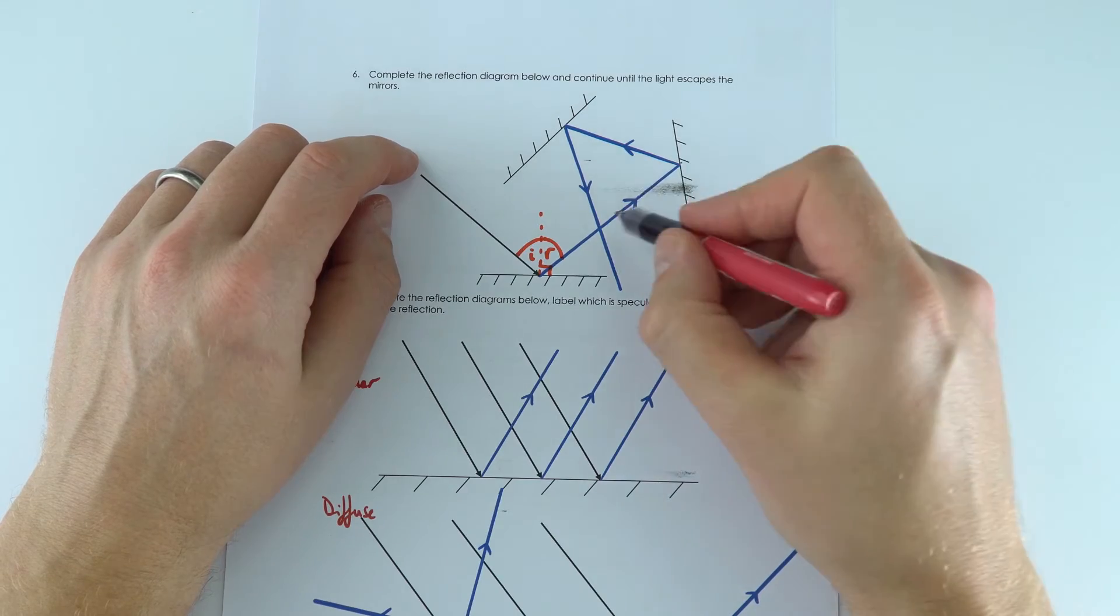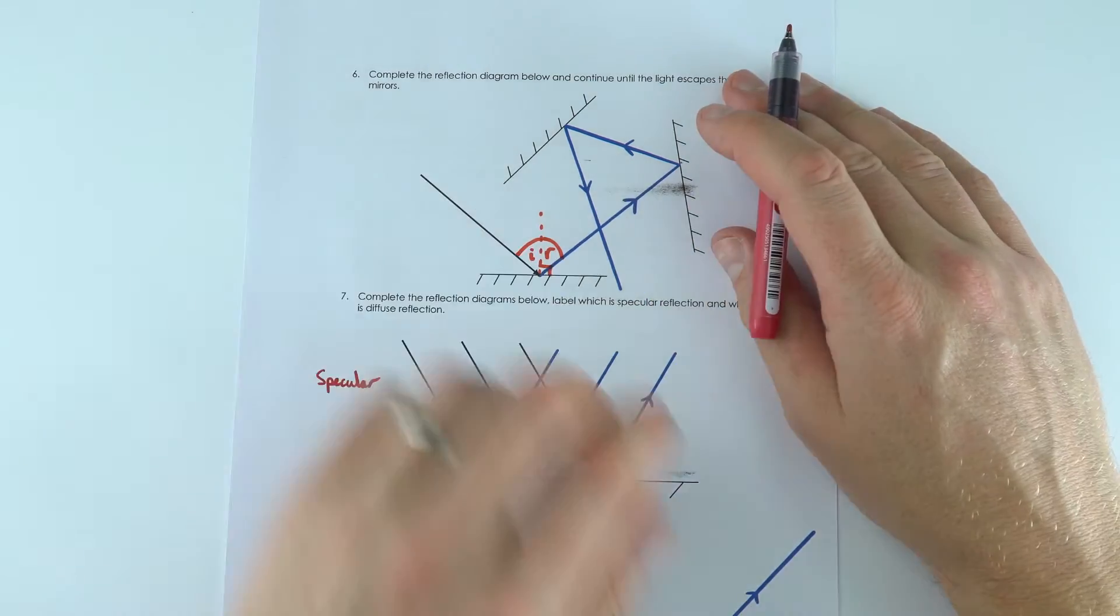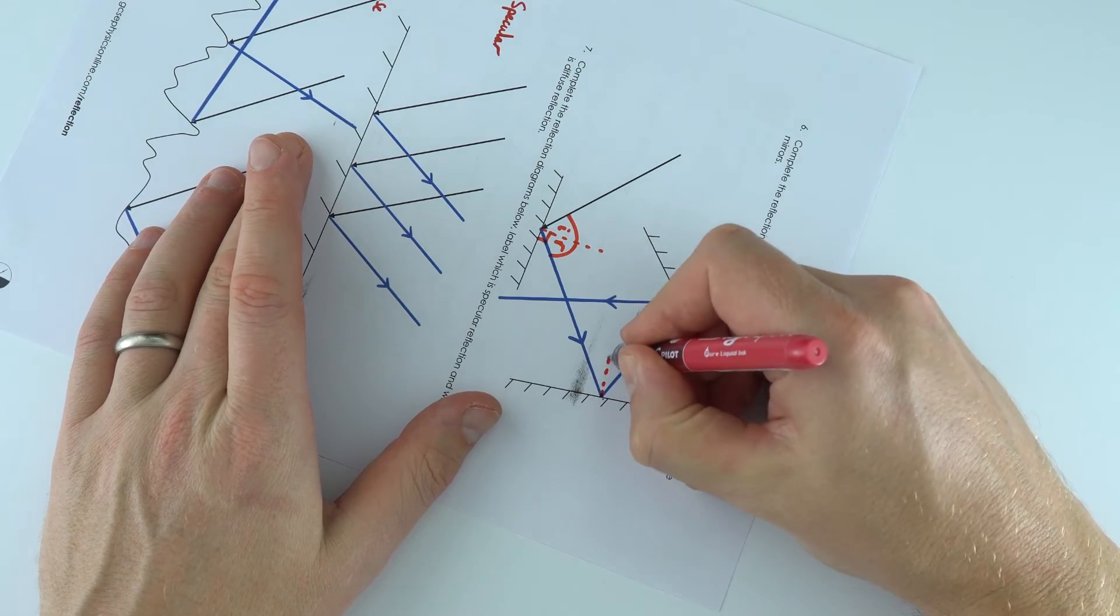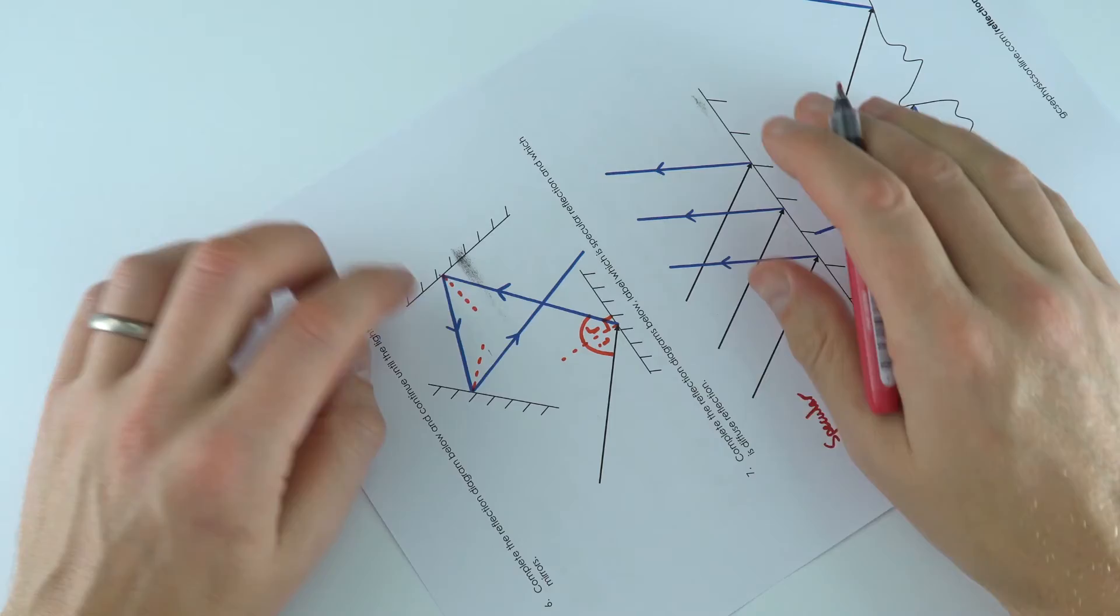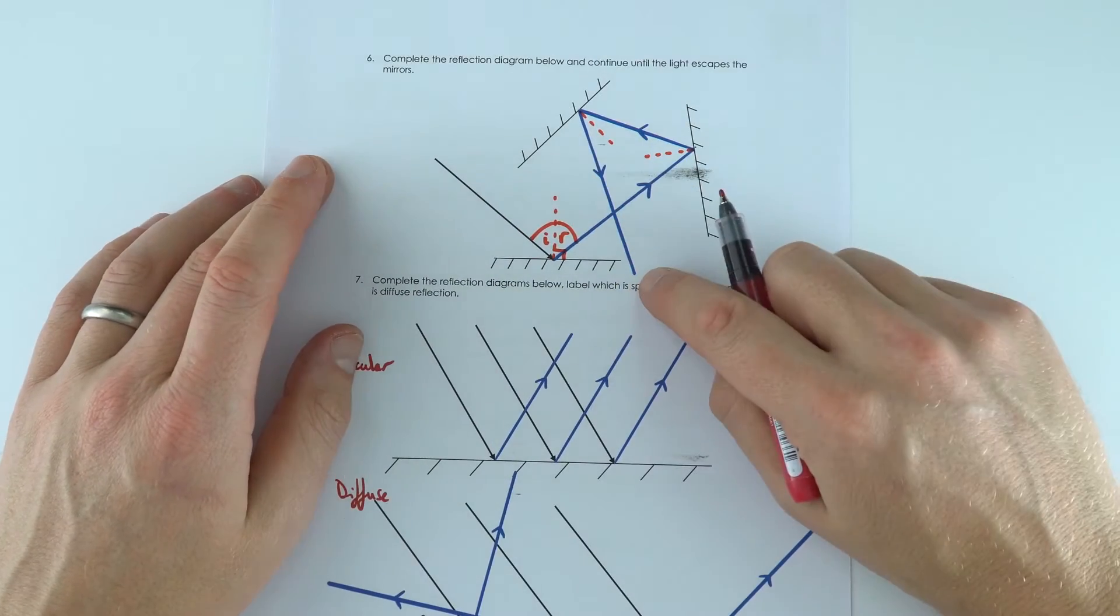When we draw these rays of light, we draw an arrow to show which way they're going. Every time it hits the surface, we could have added in one of these normal lines to make sure that our sketch was accurate to show where that ray of light went.